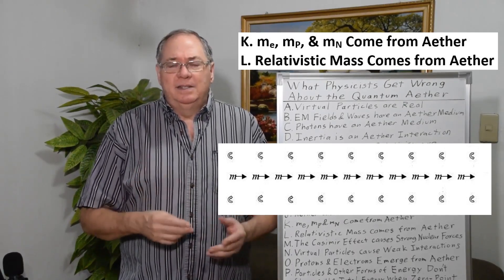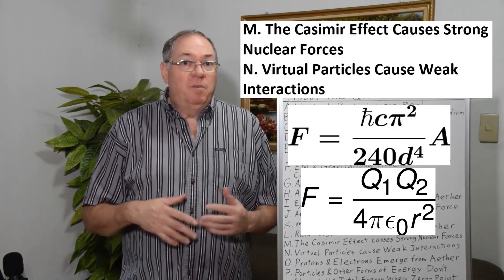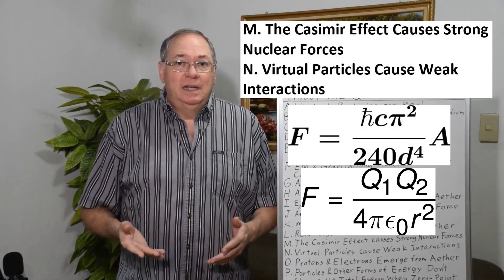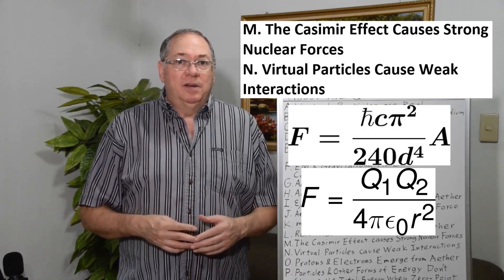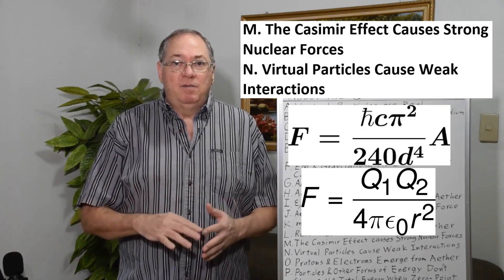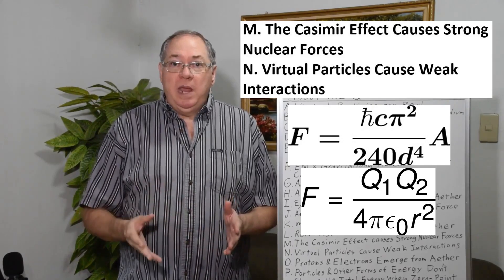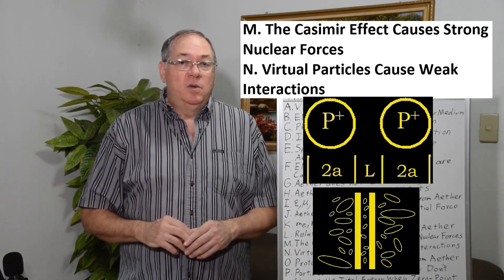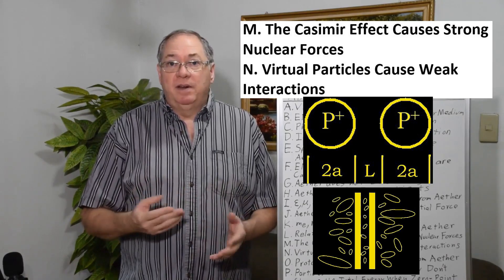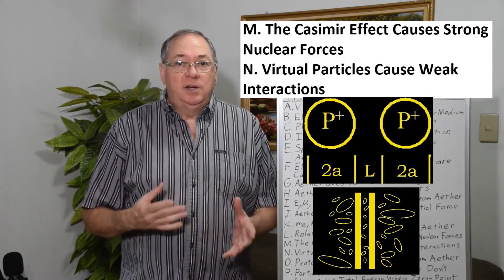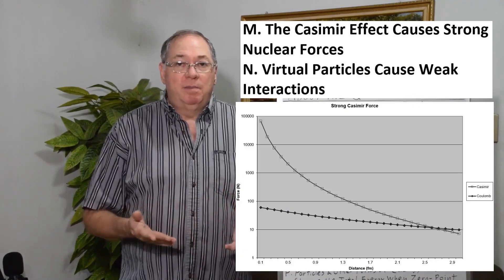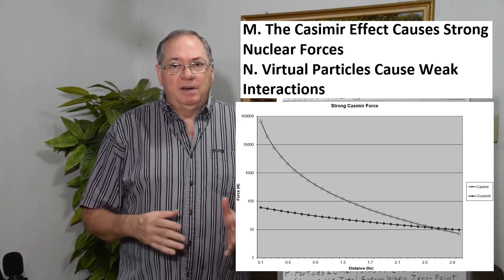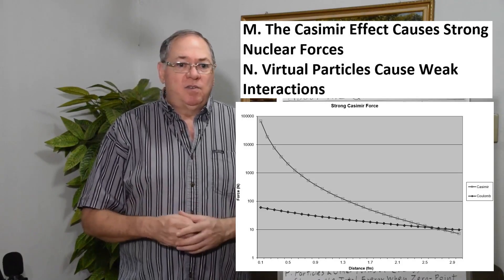So, relativistic mass is a quantum field effect. And then one thing that I calculated is that the Casimir effect equals a strong force. If you look at the equation for the Casimir effect, it varies to the distance to the fourth power. And so, even though it's weak at larger distances, eventually, it's going to be stronger than the Coulomb repulsion between two protons because they vary with the distance squared. It turns out that these forces cross at about 3 times 10 to the minus 15 meters where the strong force kicks in. So, the Casimir effect has the same energy and range as the strong force.